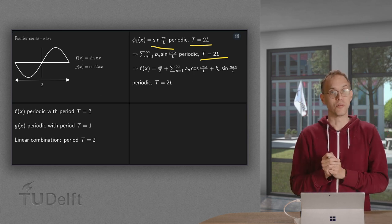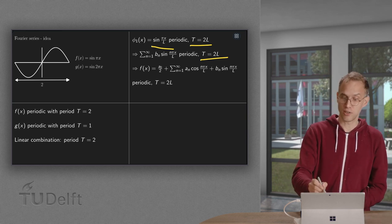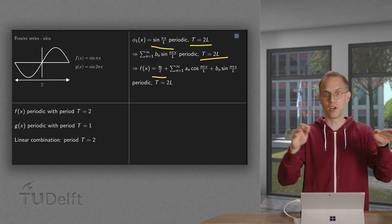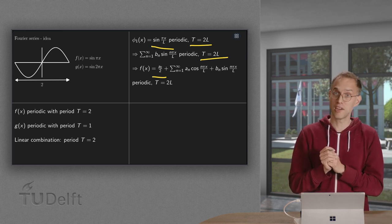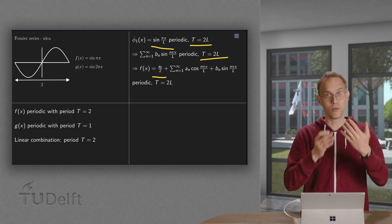Now, you can also add some cosines in the mix. You can add constants, of course. Constants are everywhere the same, so in particular they're periodic. So you can also add cosines.